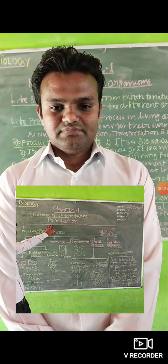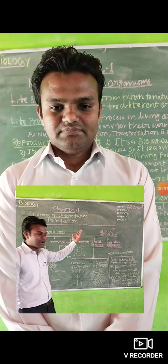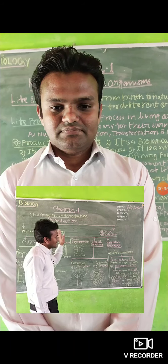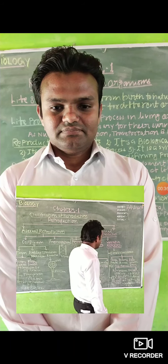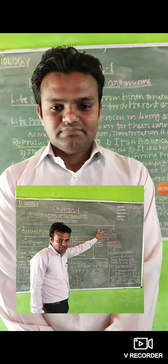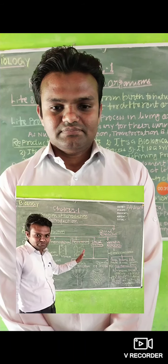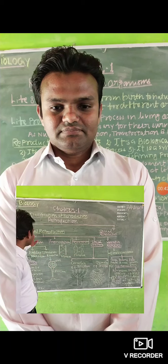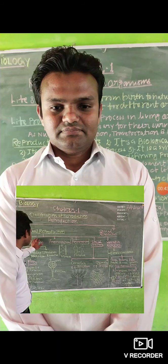Firstly, reproduction can be classified into two types. First one is asexual reproduction and second one is sexual reproduction. We have already discussed the characteristic features. So let us come first to the asexual reproduction.